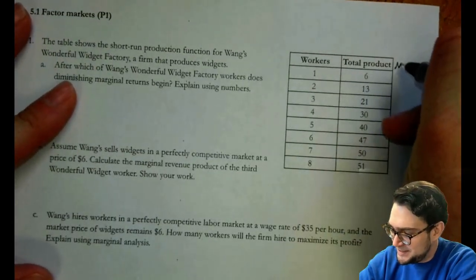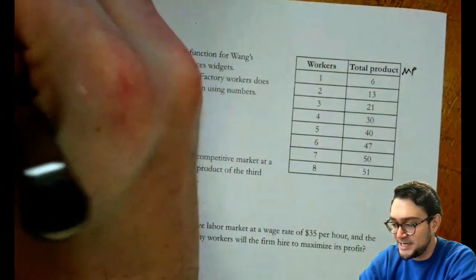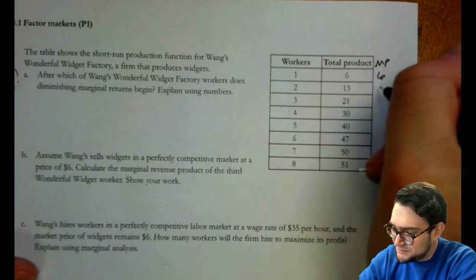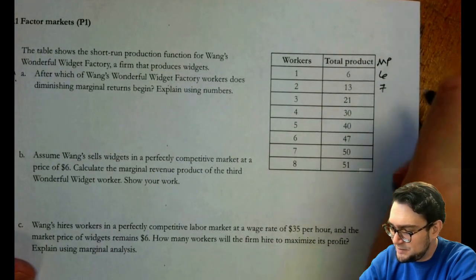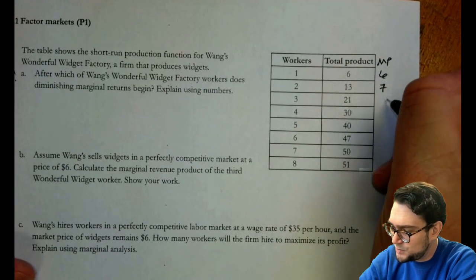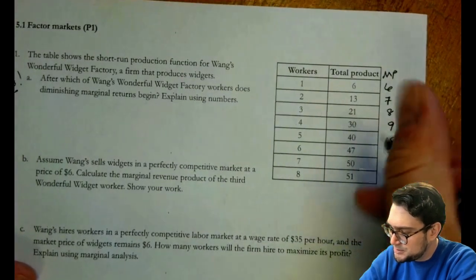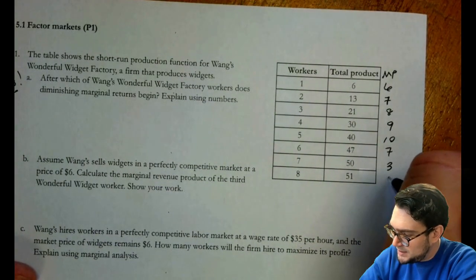So what we need is marginal product over here. This is a throwback, right? This is a unit three question. So we have marginal product of six. Then we have seven. Boy, I had a brain fart there. Seven plus one is eight, nine, ten, seven. Uh-oh, diminishing marginal returns. Three and one.